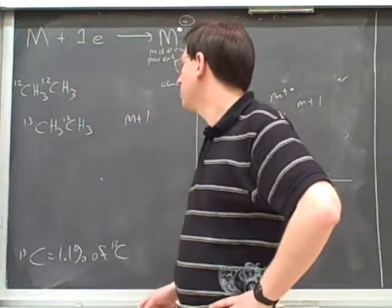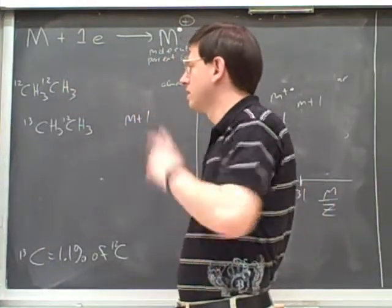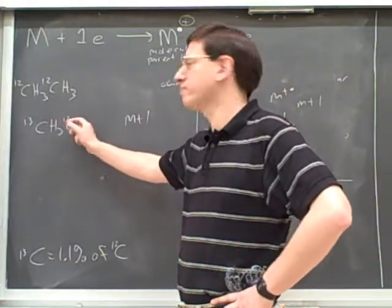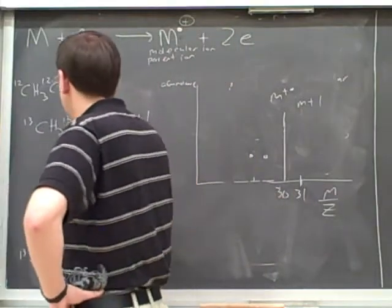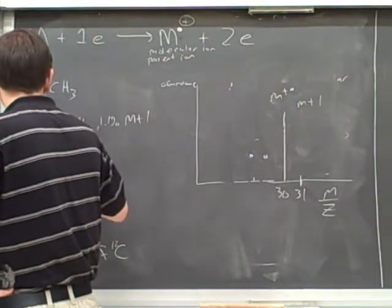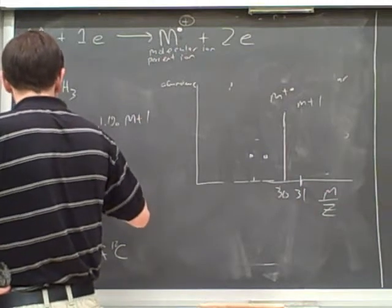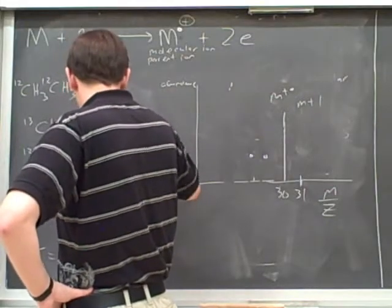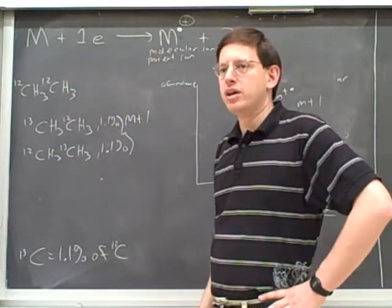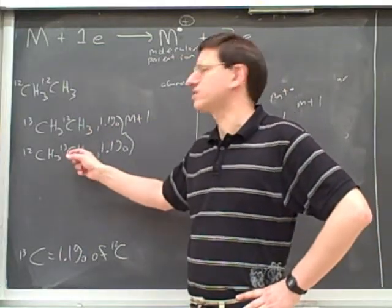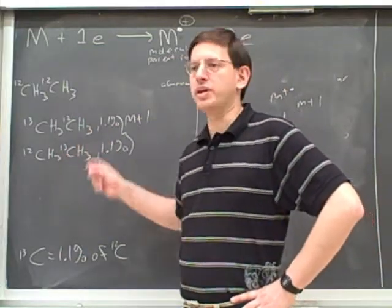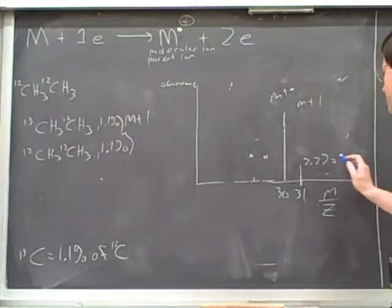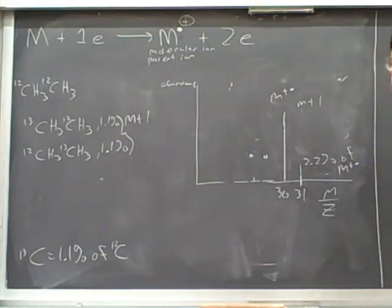However, it's important. So what percent of the particles, what percent of the fragments will look like this? 1.1%. However, it's also possible that the second carbon could be the carbon-13. 1.1% of the time that will happen. So what's the total percent of the time that either of these will be carbon-13? 2.2%. So now, this height is going to be 2.2% of the parent ion.